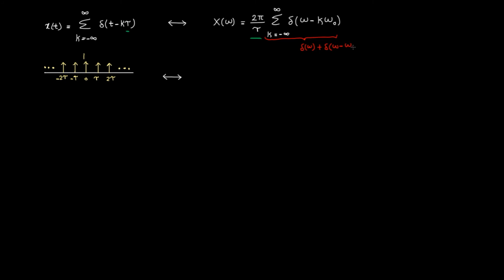and a lot of other terms, plus k is minus 1, minus 2, and a lot of other terms. If we plot this, we get this impulse train where the distance between impulses is ω0. Also, we need to multiply each delta by this constant.